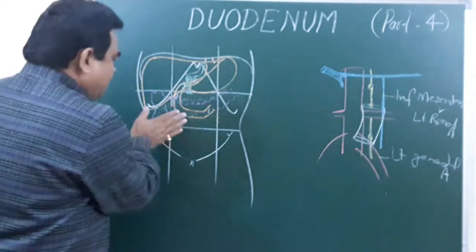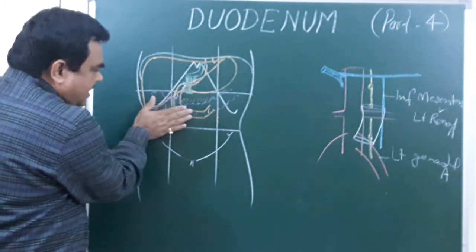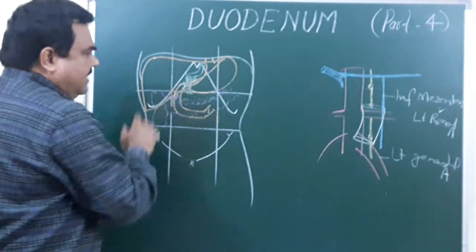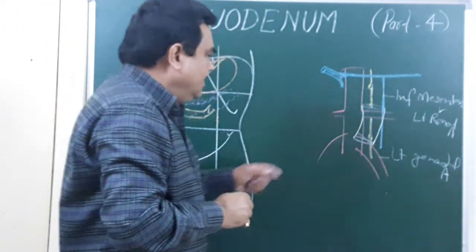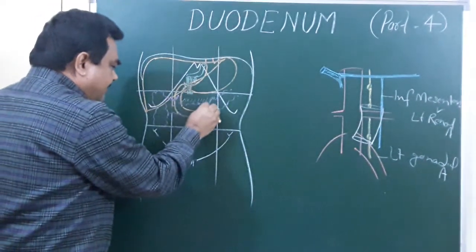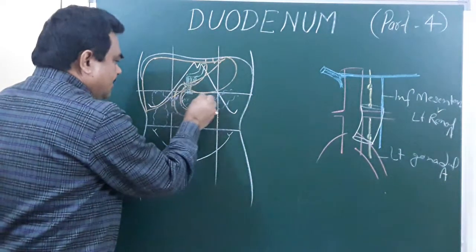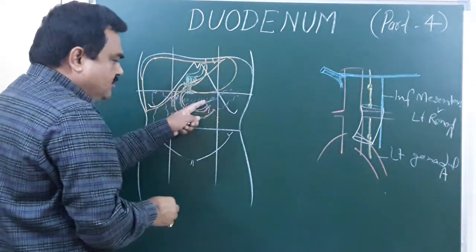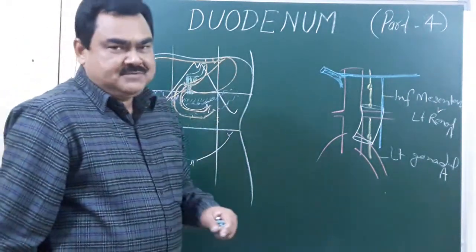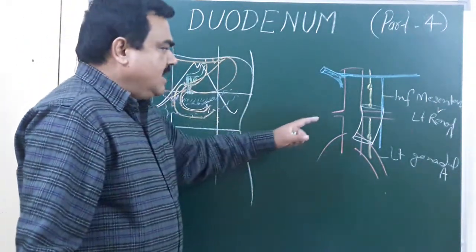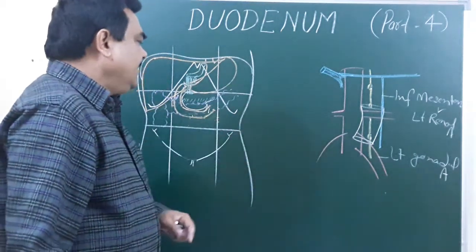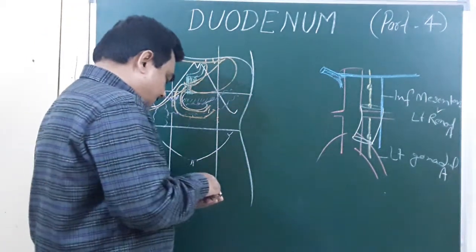Anteriorly, the fourth part of the duodenum is related to the transverse colon, as you can see here. Superiorly, the pancreas lies above it. Inferiorly, there are coils of intestines present. These are the relations of the fourth part of the duodenum.